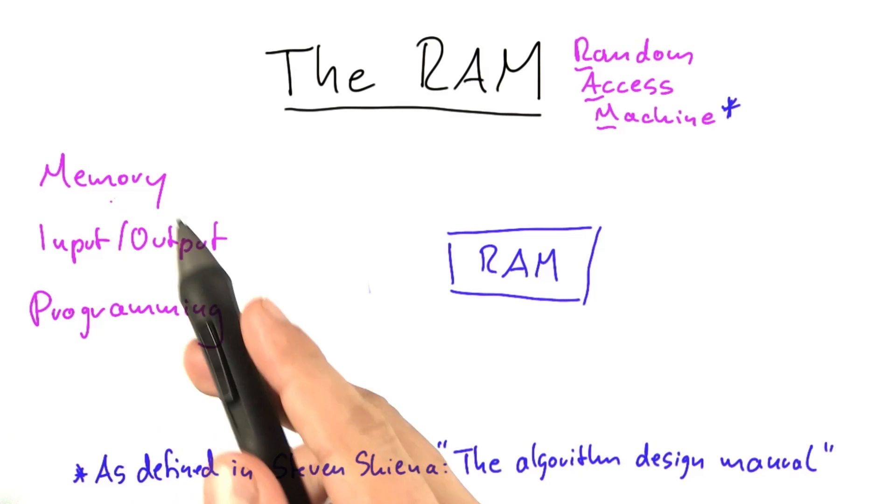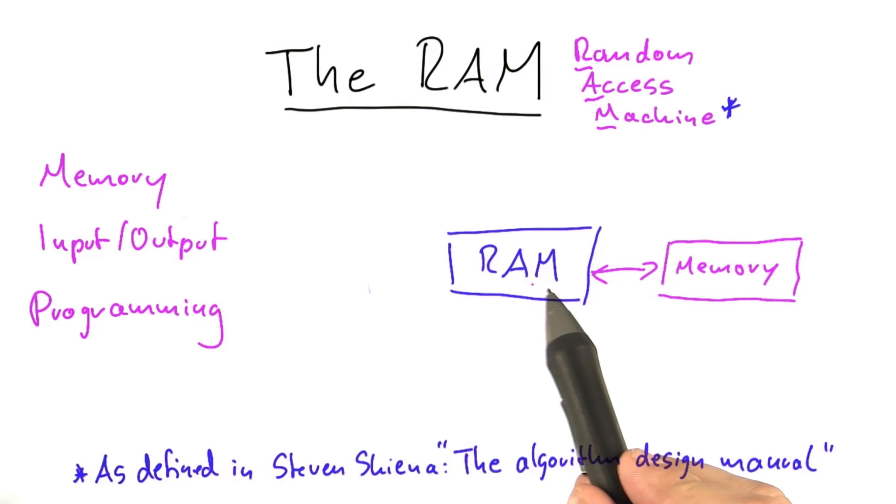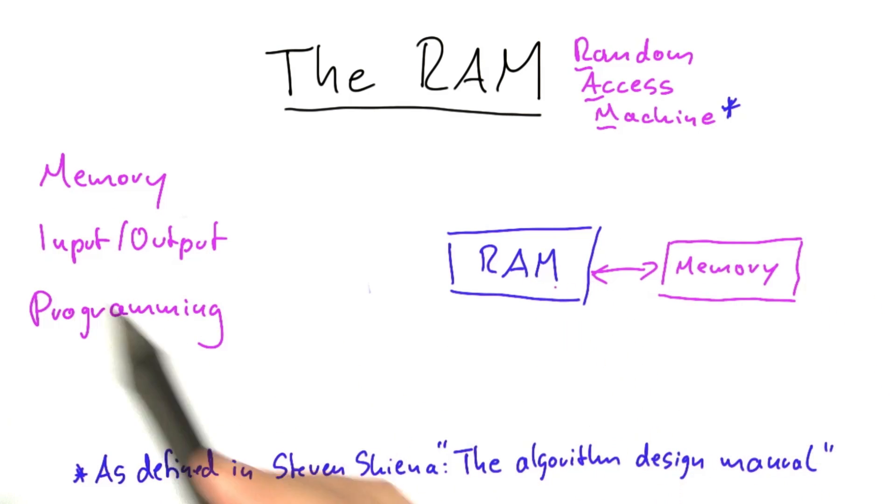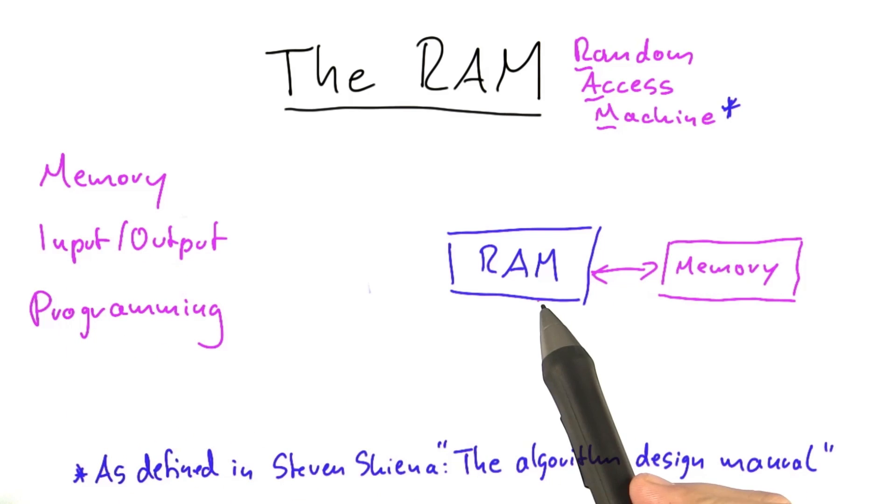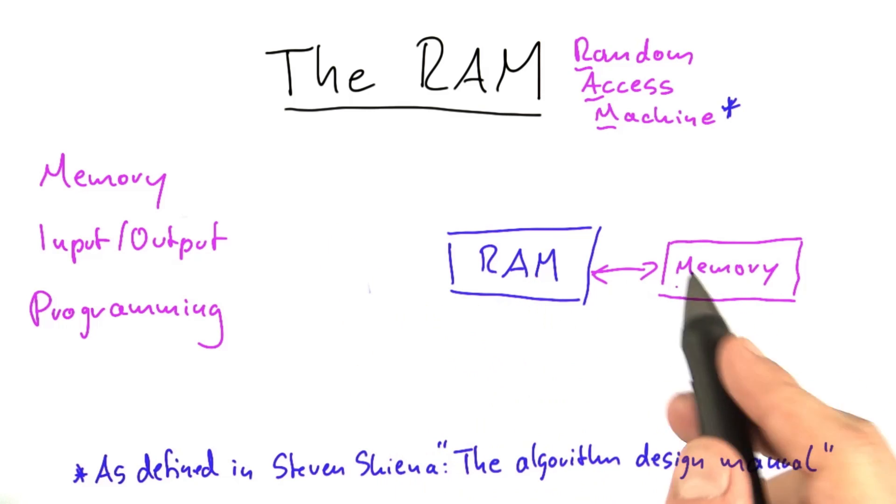The first thing that the RAM has is memory, and that memory can be used for input, output, and for holding the program that the RAM is running. But as a simplification, we're going to split the memory into three parts.